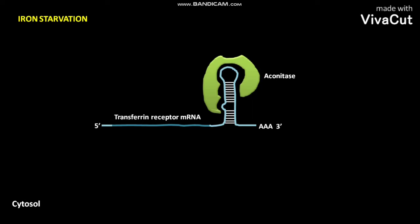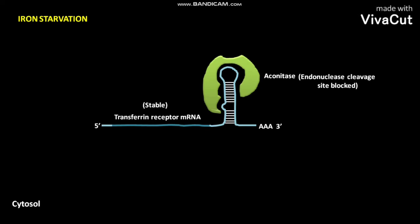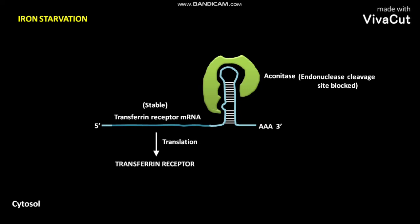Due to this binding, the endonuclease cleavage site is blocked within the transferrin receptor mRNA. Due to this blocking, the transferrin receptor mRNA becomes stable. This stable transferrin receptor mRNA then undergoes translation to produce transferrin receptor.